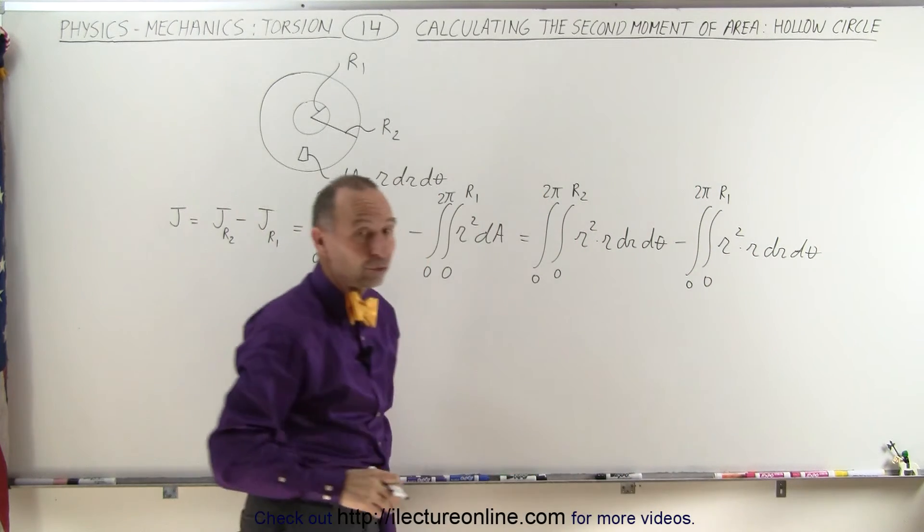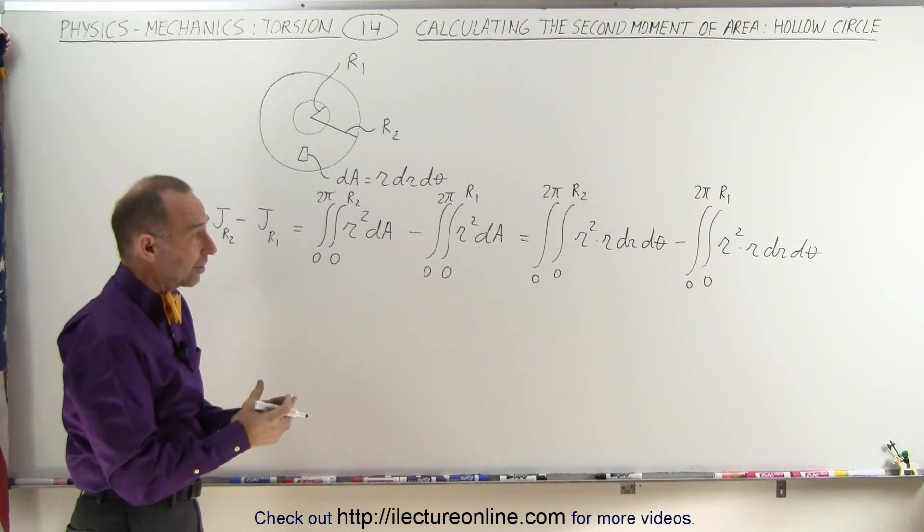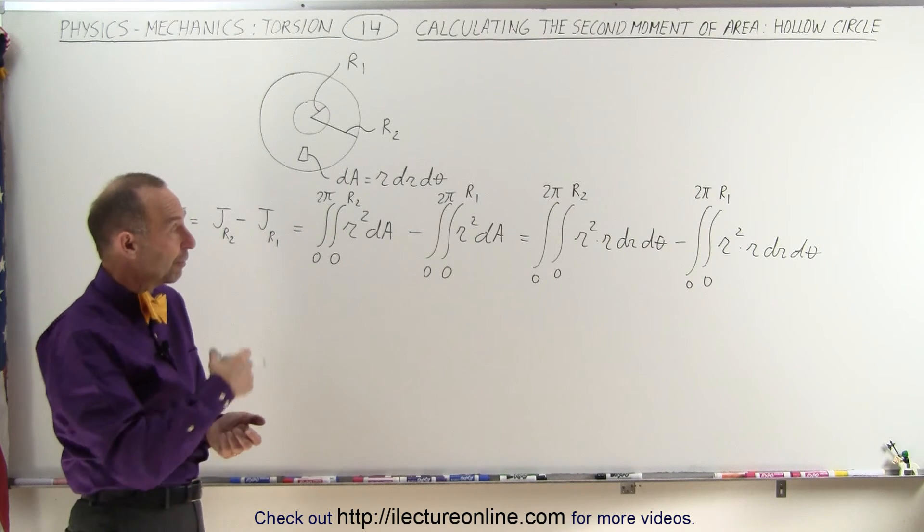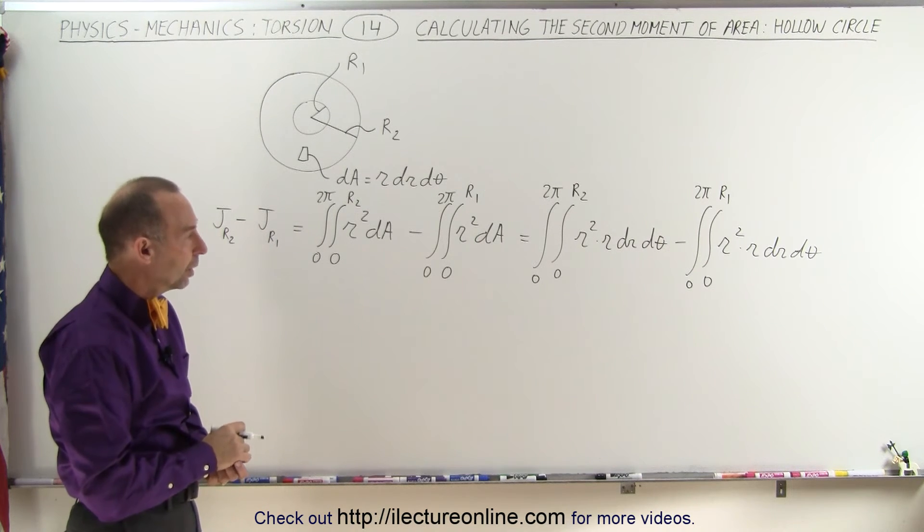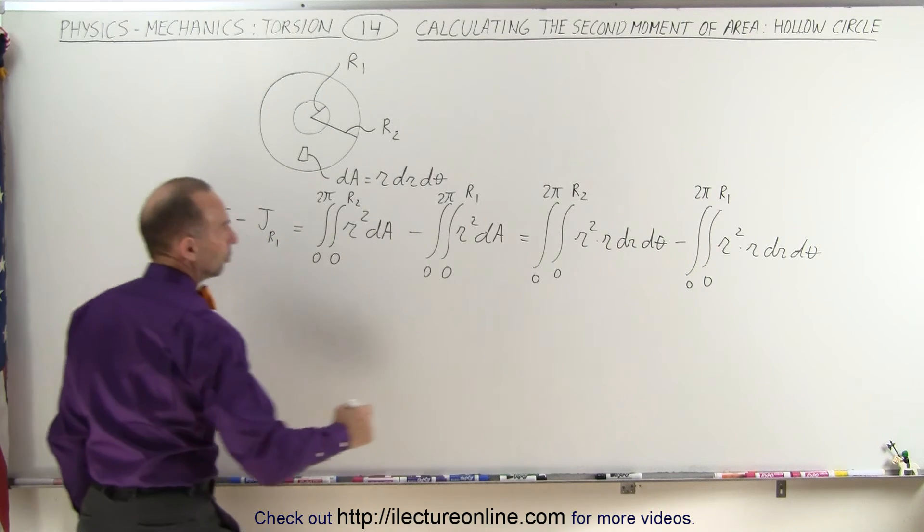So all we have to do is do one of them, the second one will look exactly the same, except instead of having limits of R2, we'll have limits of R1, which means that this is equal to,